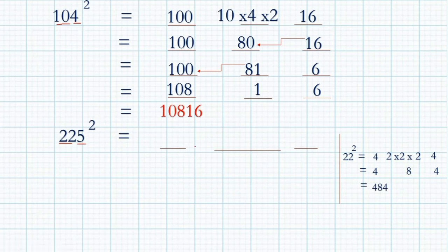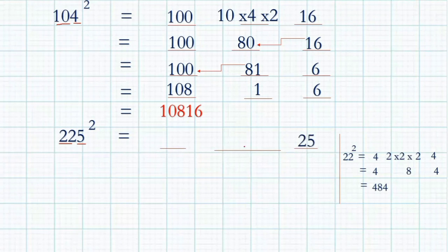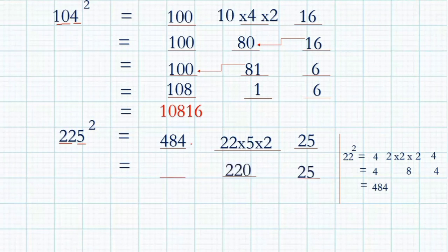Then five squared you write in the last dash, 22 squared which is 484 in the first, and in the middle: 22 into 5 into 2. That gives 25 in the last, and 22 into 10 is 220 in the middle, with 484 in the first. Write down 5 in the last and carry 2 forward to the next.